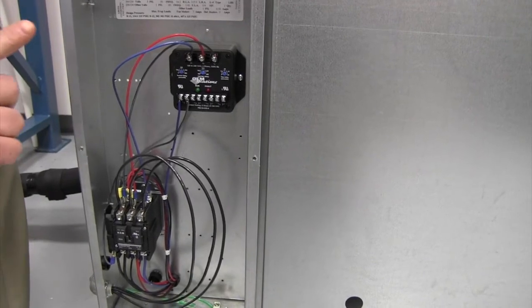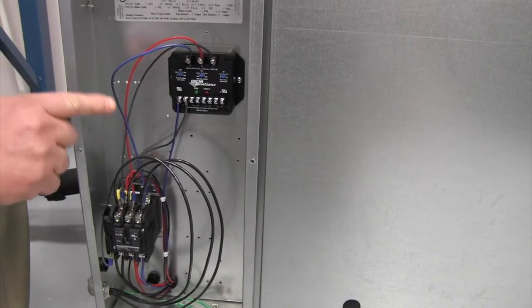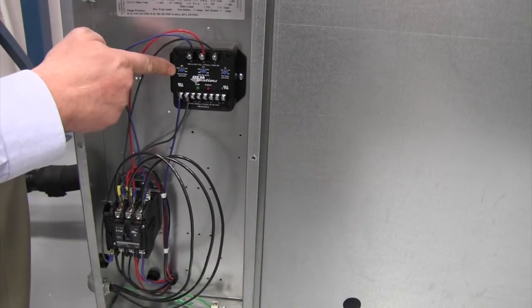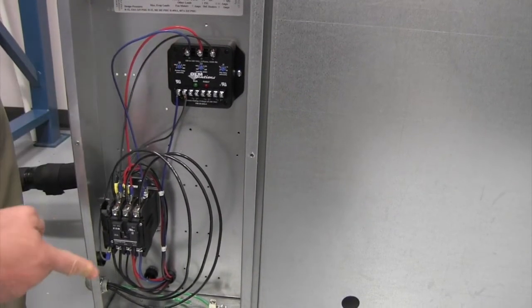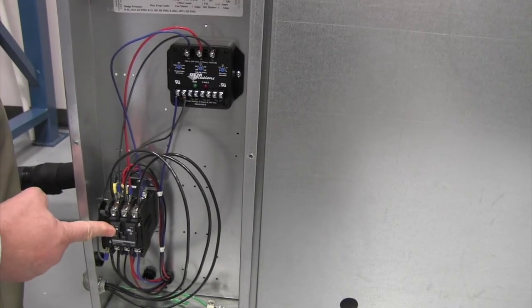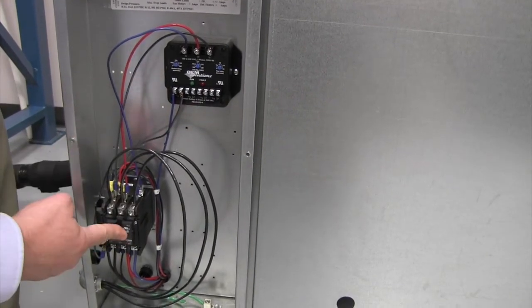You want to note that we do not have this unit energized, and we know that it's not energized because we don't have any indicator lights on the phase monitor. This is our phase monitor, and this is our main contactor bringing the three-phase power into the compressor.